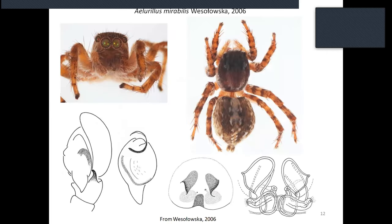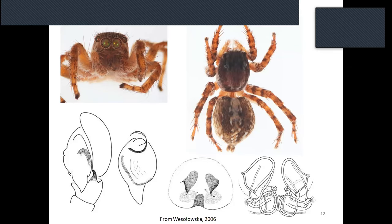Allurellus mirabilis was described from both sexes from Namibia by Wesołowska in 2006. The conformation of the copulatory organs is different from that of Allurellus: in males, the palpal tibia has only one apophysis, the embolic division almost forms a circle, and the terminal apophysis is reduced. In females, the copulatory openings are located on the side of the epigyne plate, which is unusual for Allurellus, where copulatory openings are always located close to each other. This species belongs to a new undescribed Allurelline genus.